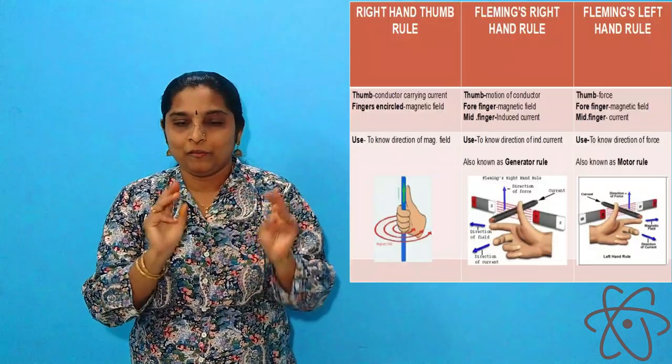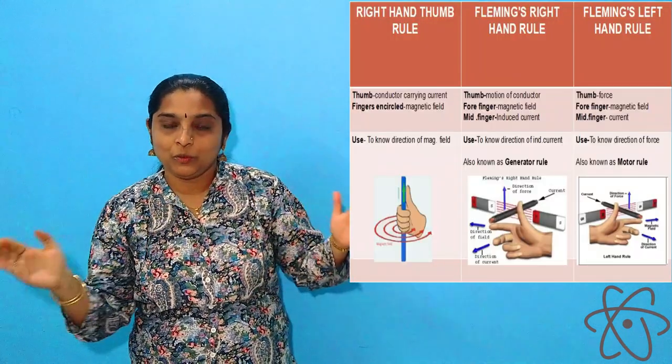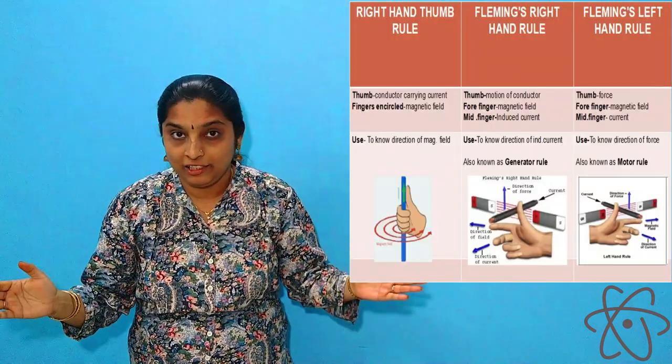Let us recap what we learned in this video. First we learned Fleming's right hand rule. Actually there are three rules in this whole lesson — don't get confused between all three, as they are very important from your examination point of view. Let us quickly recap all three rules so we can distinguish between them easily.